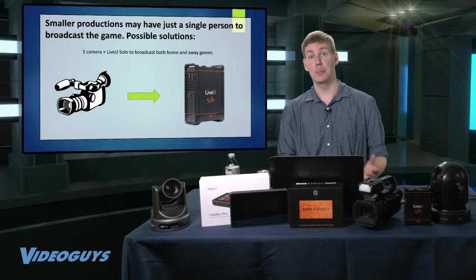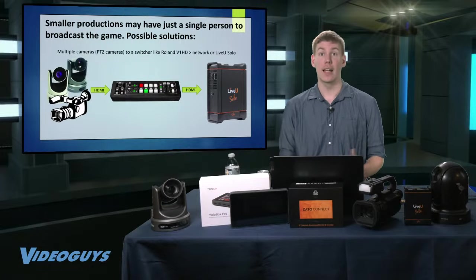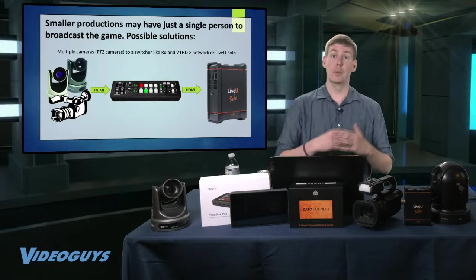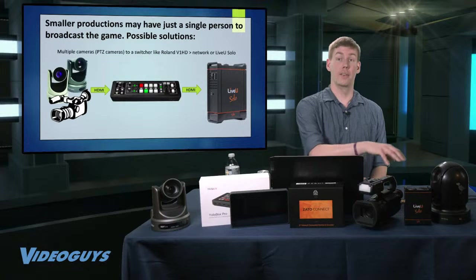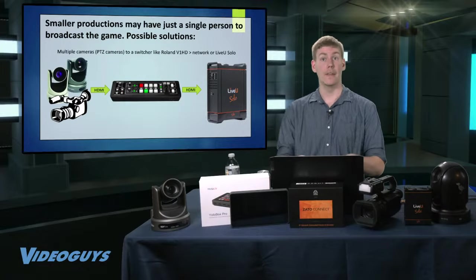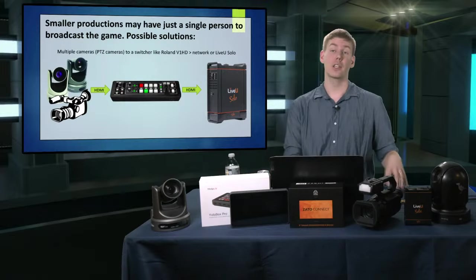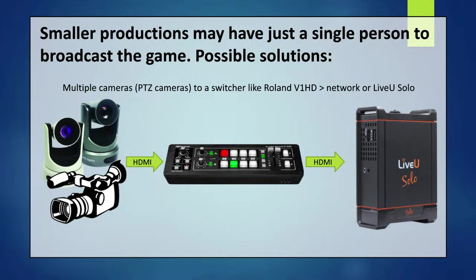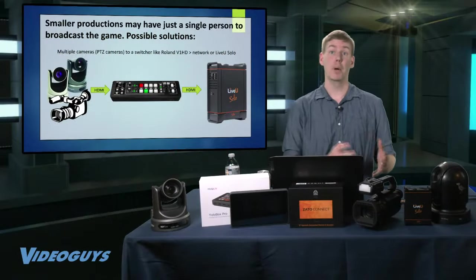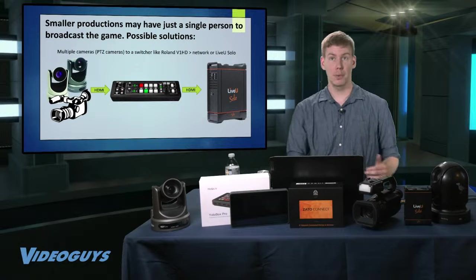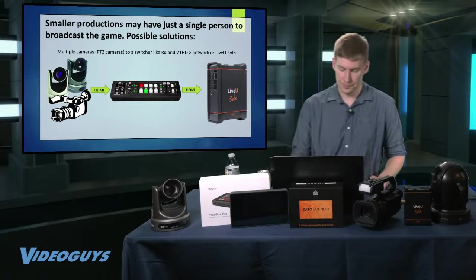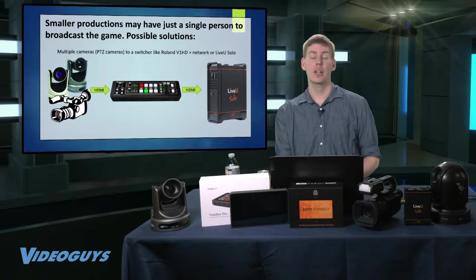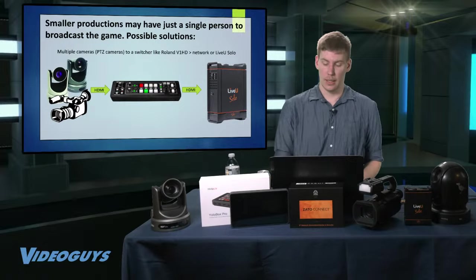What LiveView does is it combines those two cell phone signals into one giant pipe to make sure that you have a reliable connection to the internet pretty much wherever you are. With it being able to take in a feed from any SDI or HDMI input, you can get a little bit more involved. If you wanted to have multiple cameras connected to a switcher and then connect the switcher output to the LiveView, that's a way to get multiple cameras in. In this example, we're talking about a Roland V1 HD+, which allows you to switch between up to four cameras.